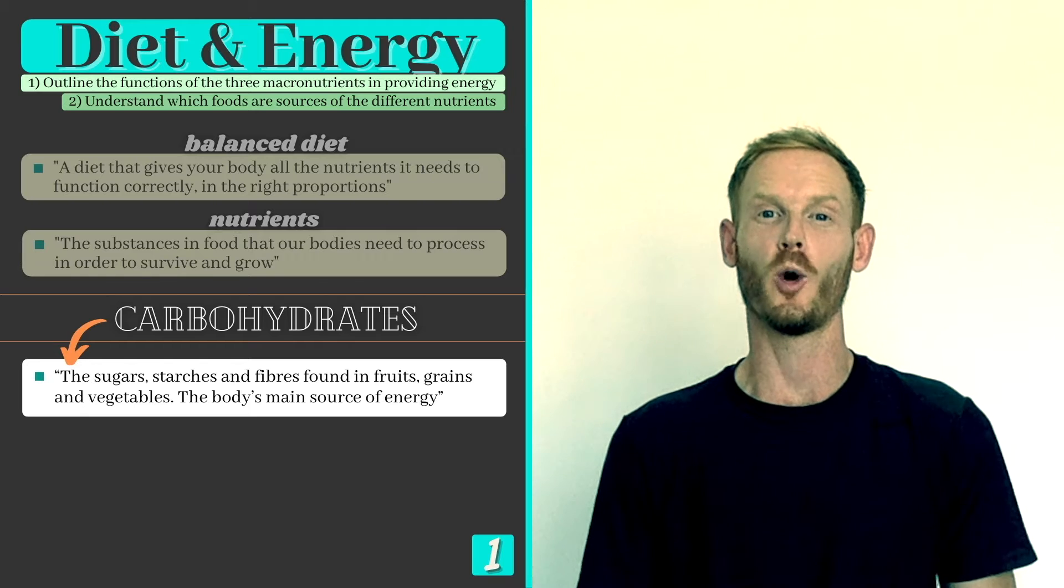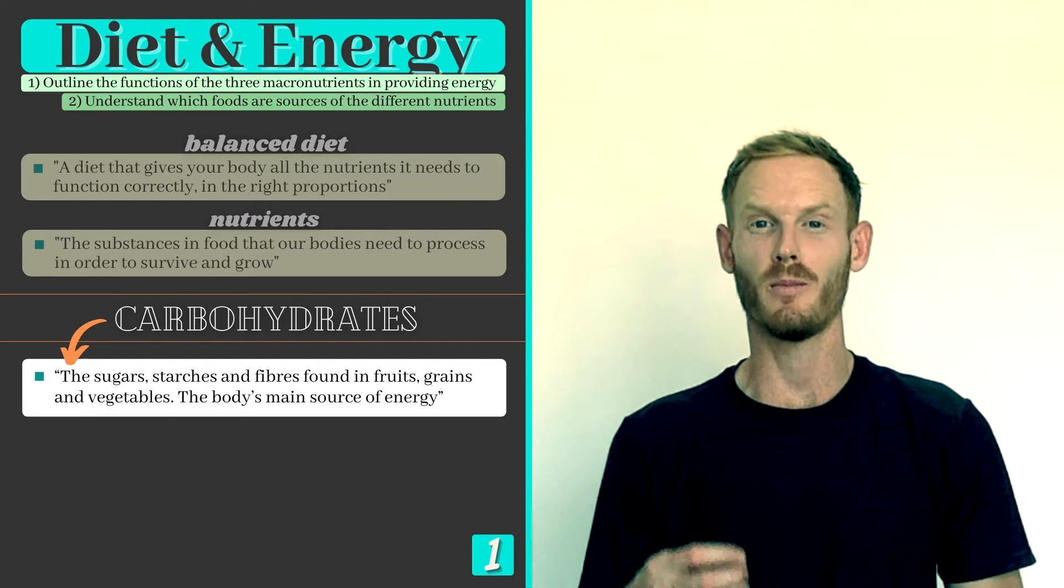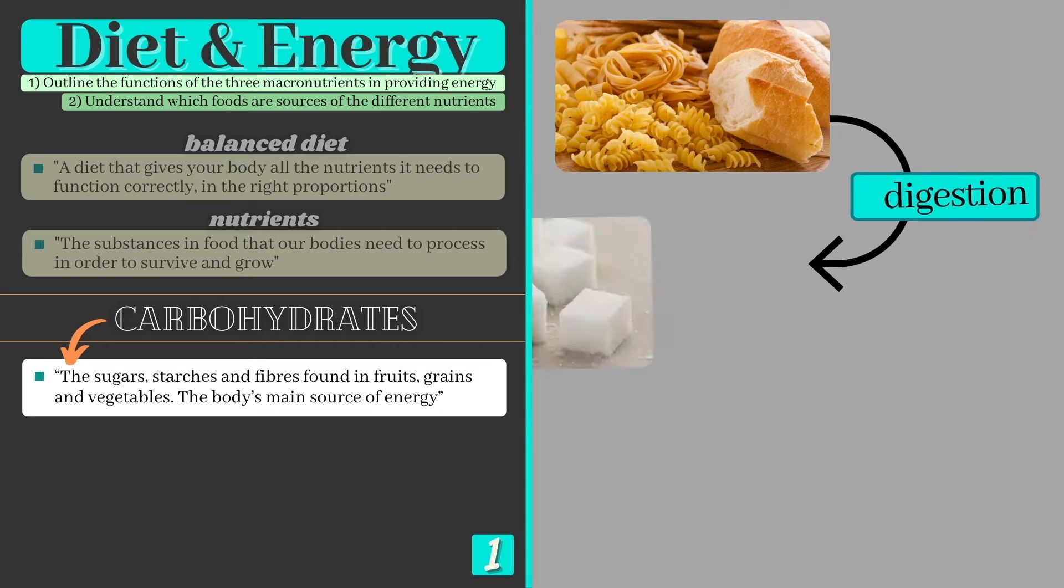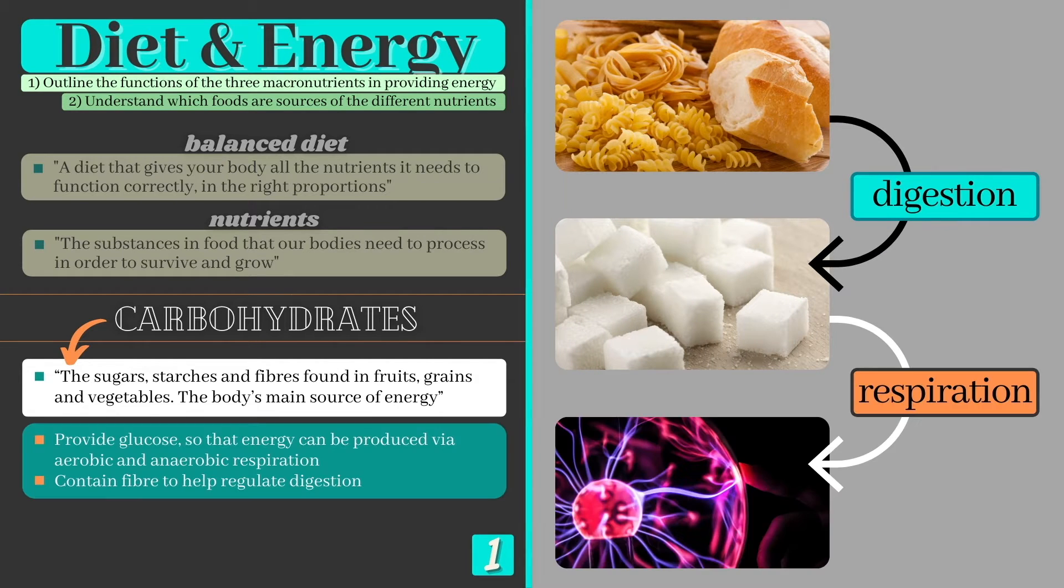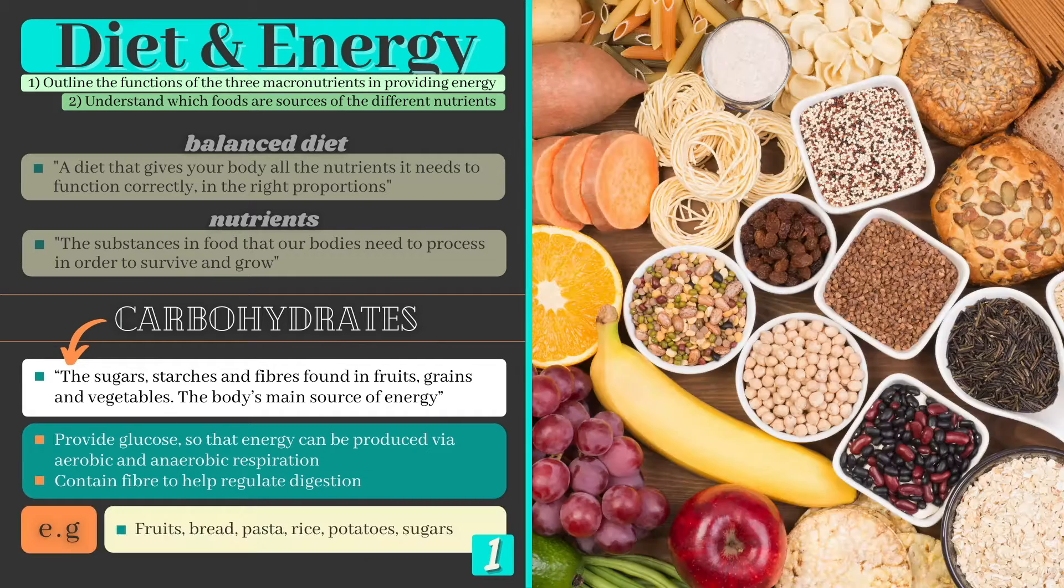In topic 4.1 we learned that carbohydrates are broken down by digestion into smaller molecules called glucose which is the body's preferred fuel source. The glucose is used to produce energy or ATP via both aerobic and anaerobic respiration.